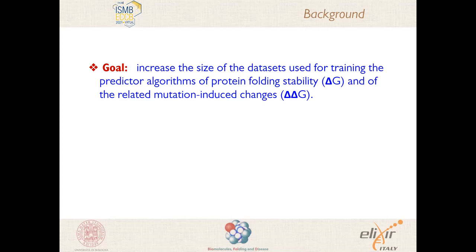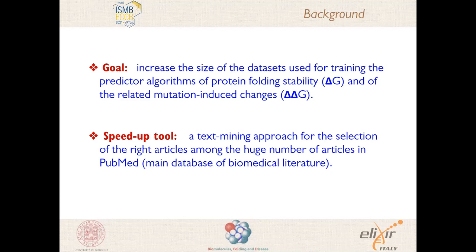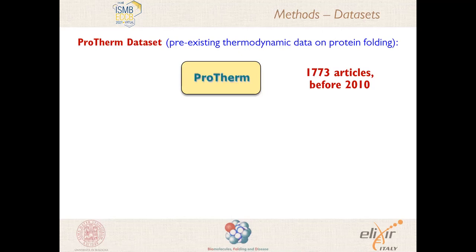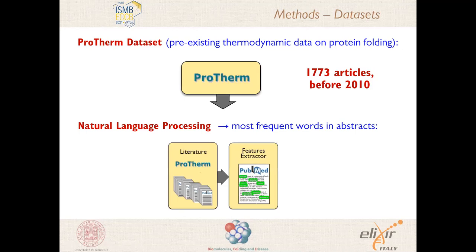To reach this goal we needed a tool for speeding up the selection of the right articles among the huge number of articles in PubMed, which is the main database of biomedical literature. We started from an already existing dataset of thermodynamic data on protein folding called ProTherm, updated up to the year 2010 and containing 1800 PubMed articles. We applied natural language processing to analyze word occurrence in these 1800 abstracts. The three most frequent words were protein, stability, and unfolding — PSU for short — and we used these three words for searching the abstract collection of PubMed.